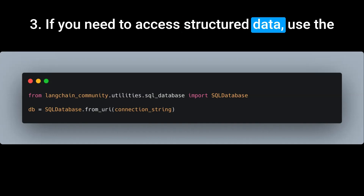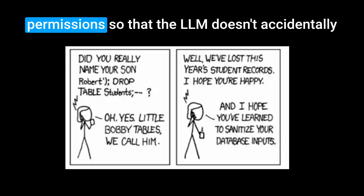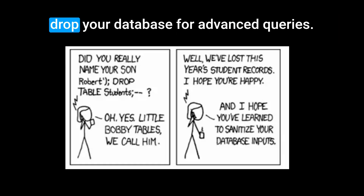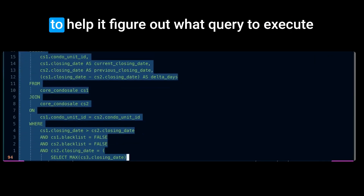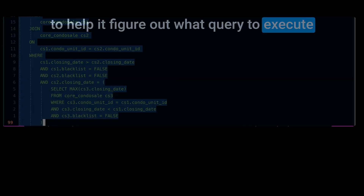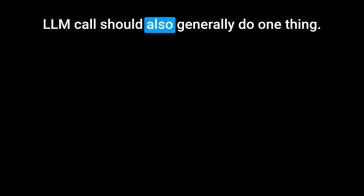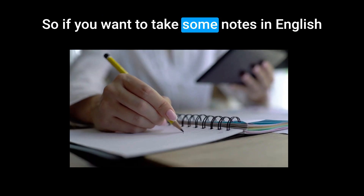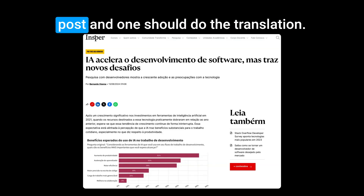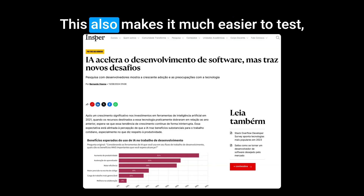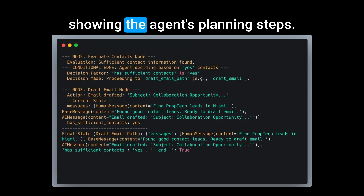If you need to access structured data, use the SQL database connector tool from Langchain. Make sure to give your SQL user appropriate permissions so the LLM doesn't accidentally drop your database. For advanced queries, you can feed the LLM a boilerplate SQL query to help it figure out what to execute. Generally, give the agent a narrow scope of responsibility, and each LLM call should do one thing. For example, if you want to take notes in English and generate a blog post in Portuguese, one call generates the post and one does the translation — this also makes testing much easier.